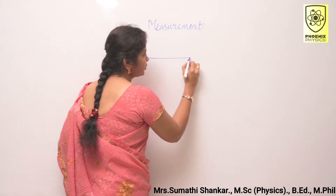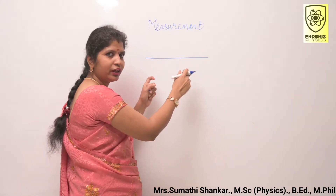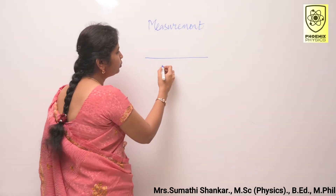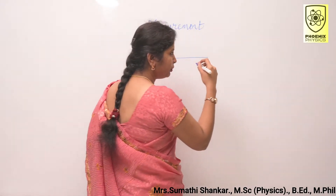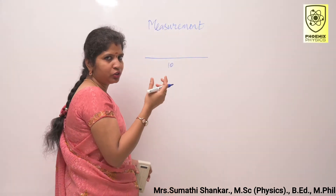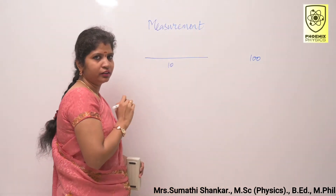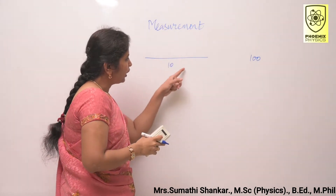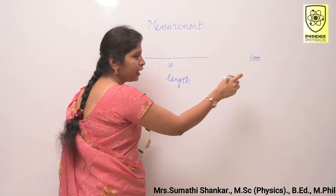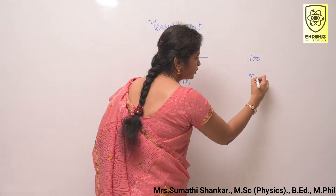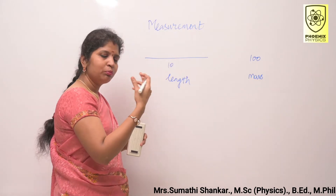Consider this is a rope. I am going to measure the length of the rope with the help of a tape. The tape shows the numerical value as 10. Similarly, I am going to measure my weight with the help of a weighing machine, and the weighing machine shows the numerical value as 100.